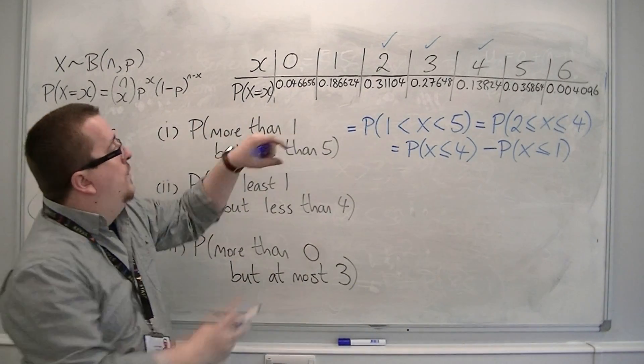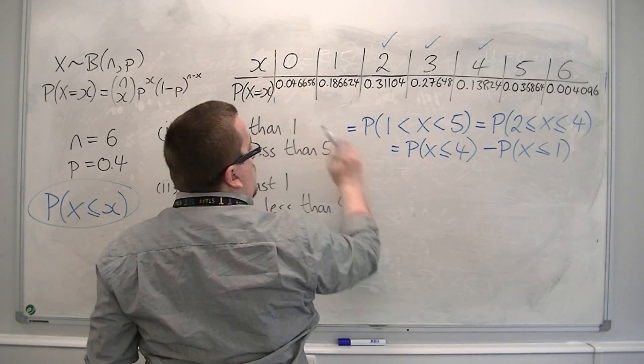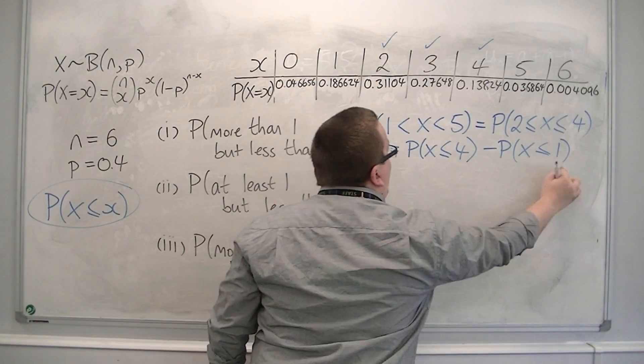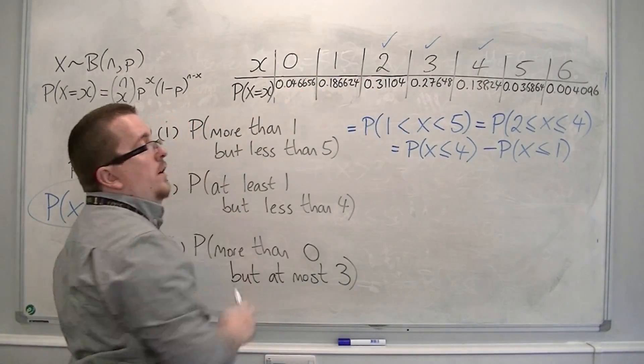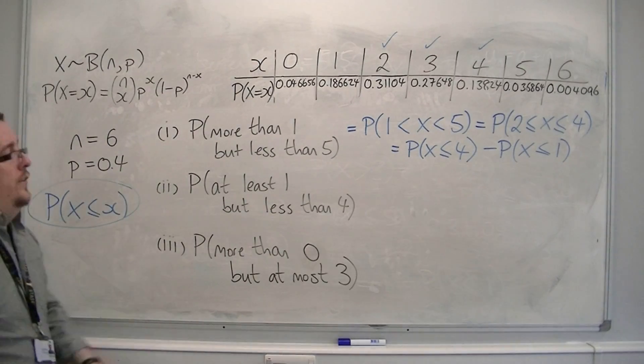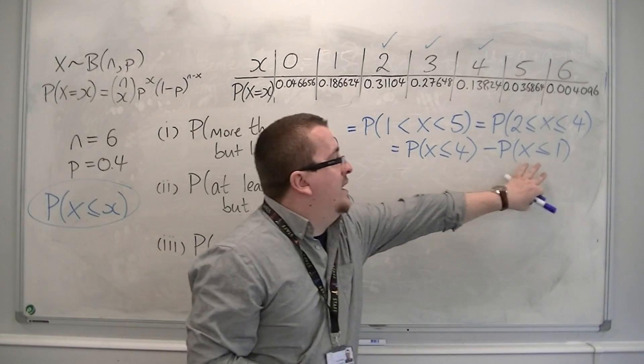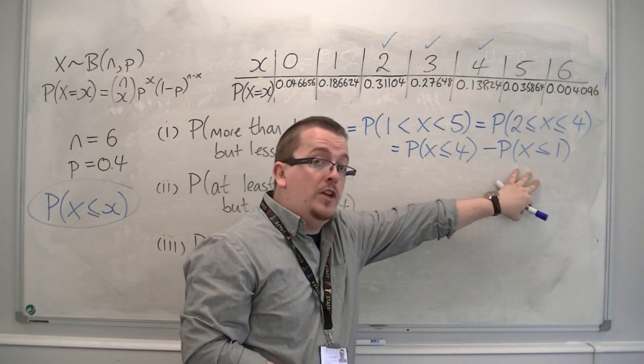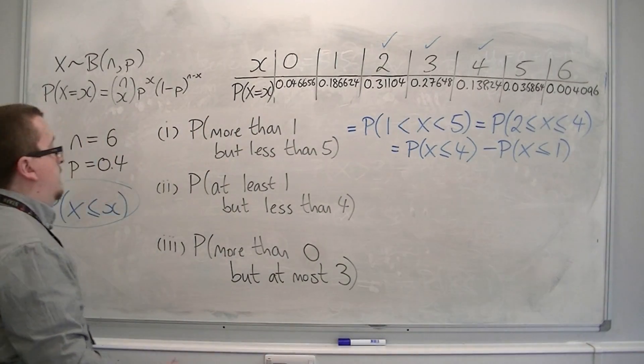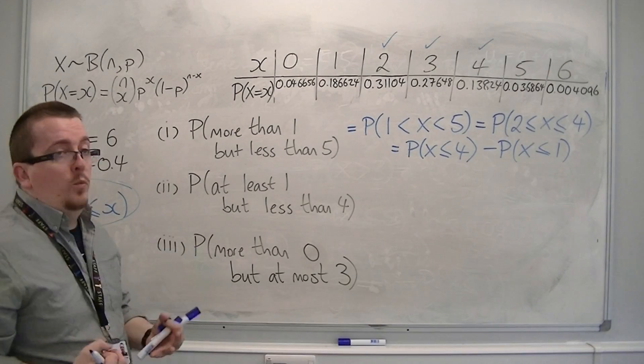So I get the four, three, two, one, and zero from that probability and take away the first two that I don't want. So this is something I can now calculate because I can calculate each of those individually and then subtract one from the other.